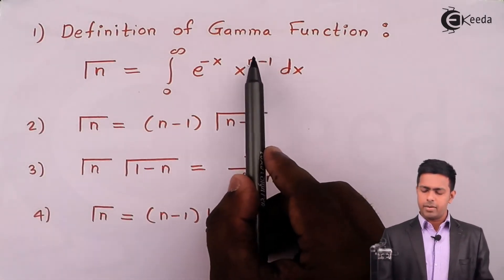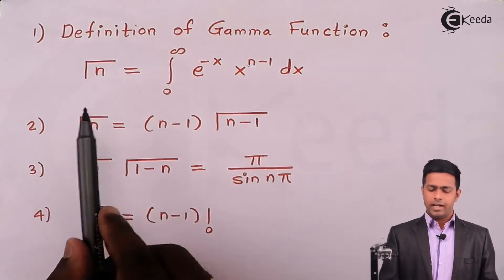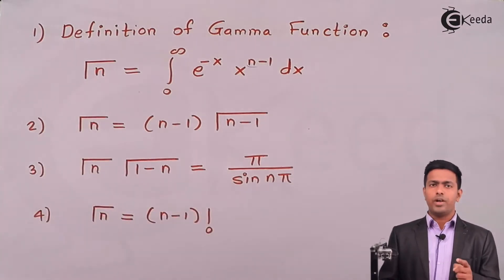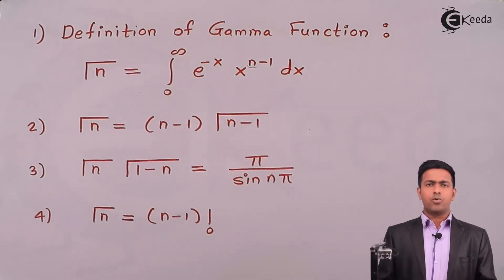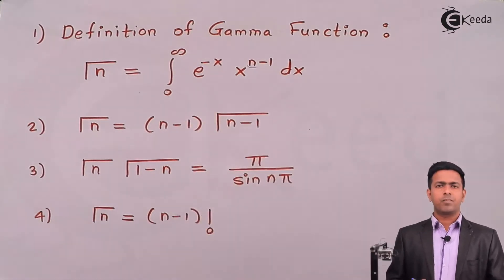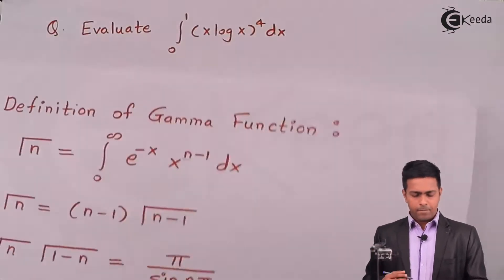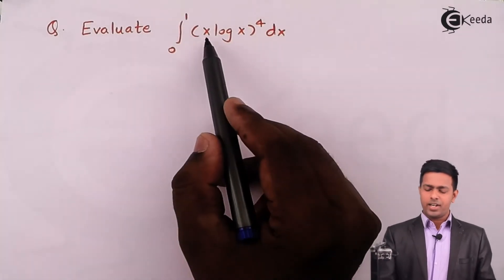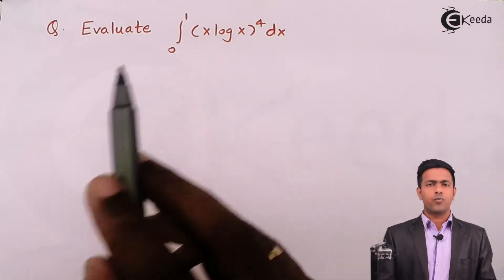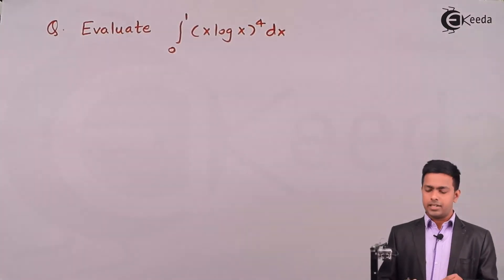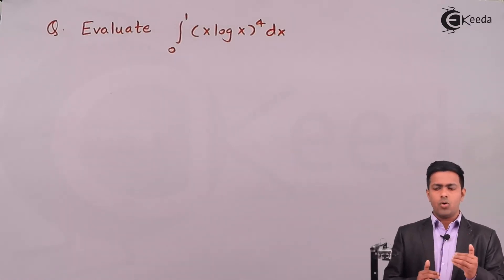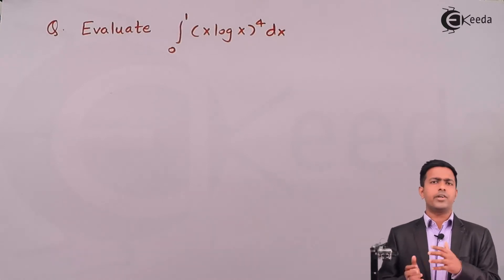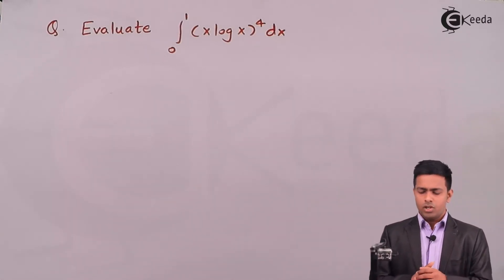Notice that the power of x is n-1, whereas the value inside gamma is n — meaning the gamma argument is always 1 greater than the power of x. We must bring our integration into this format. In our problem, we have x⁴ as the algebraic term and (log x)⁴ as the logarithmic term. But the gamma function requires an exponential term, so we need to convert the log term into an exponential.